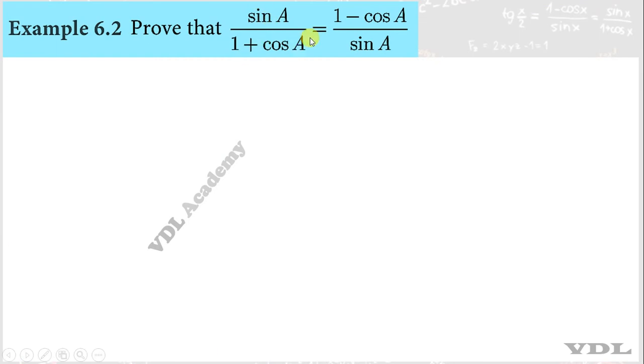sin A divided by 1 plus cos A is nothing but 1 minus cos A divided by sin A. So, left hand side, this is not a direct formula. That is what we do.